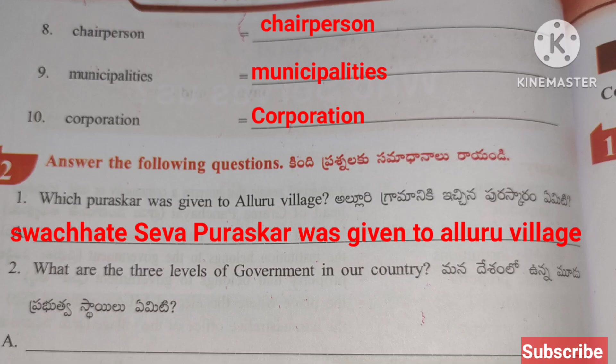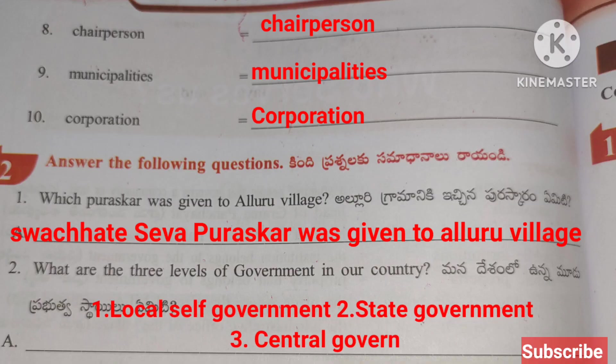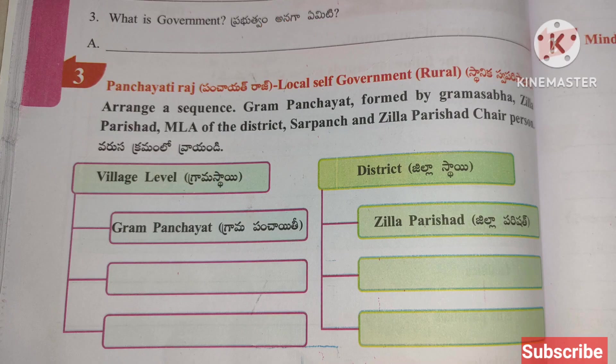What are the three levels of government in our country? One: Local Self-Government. Two: State Government. Three: Central Government.